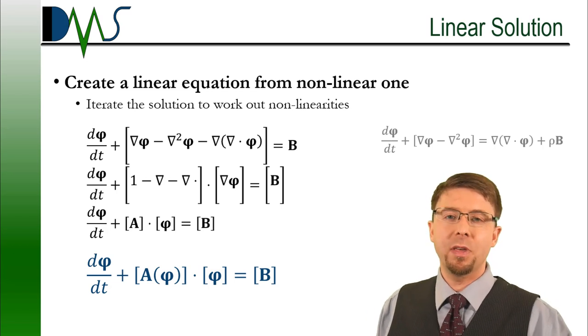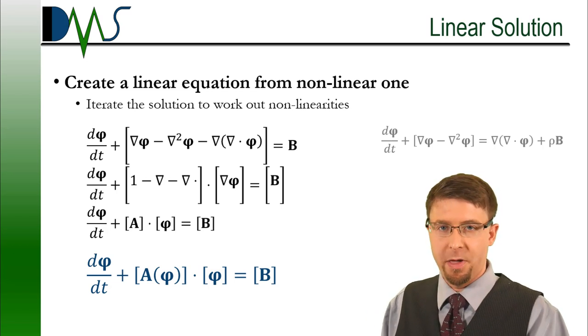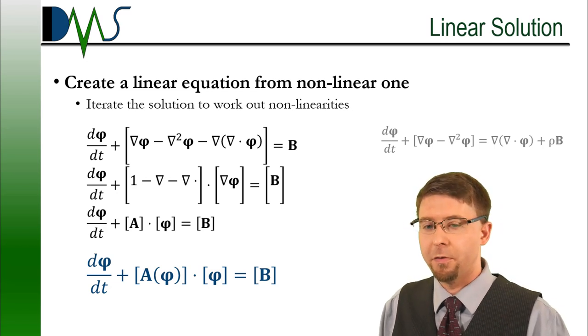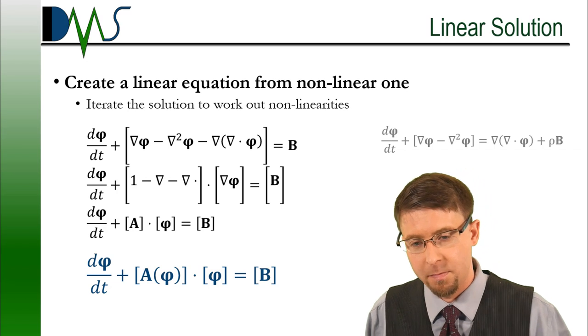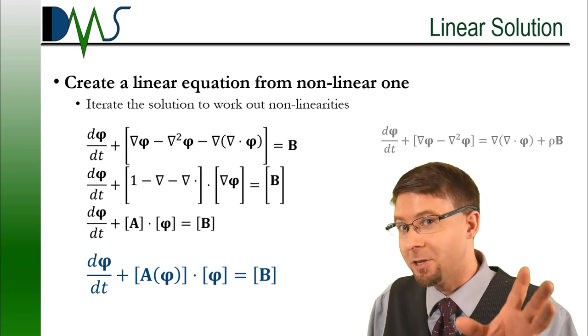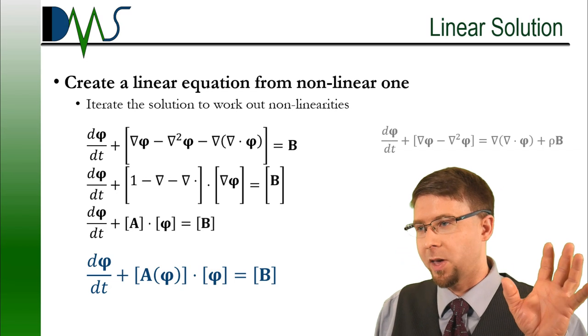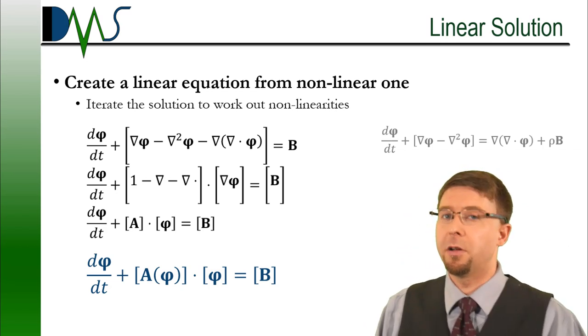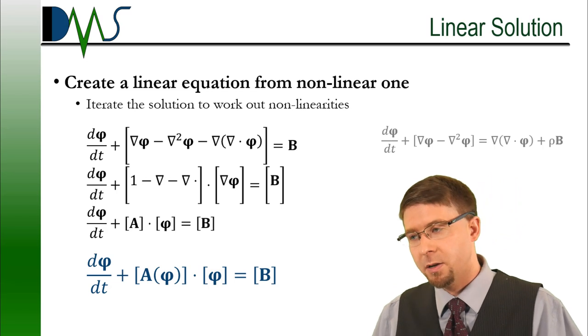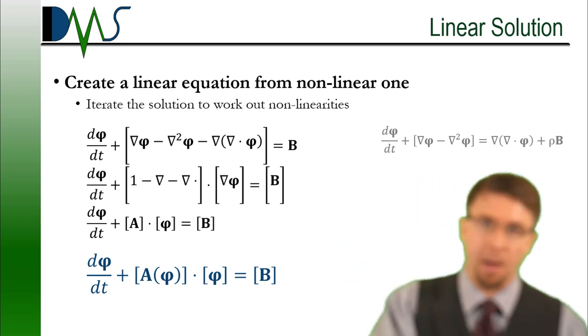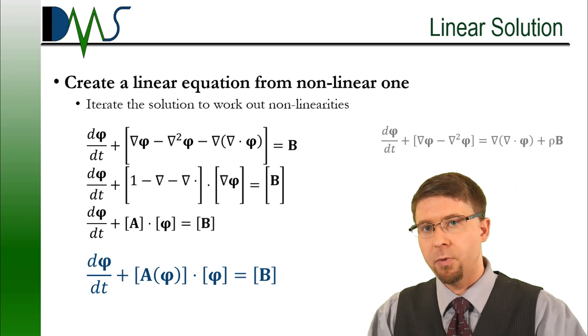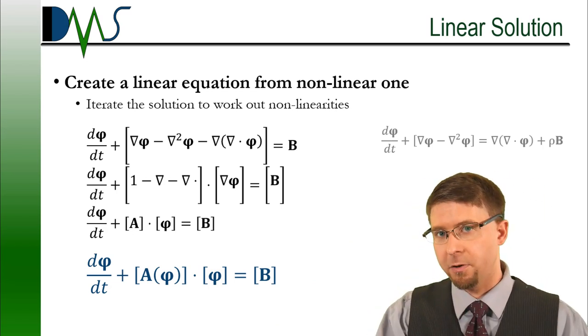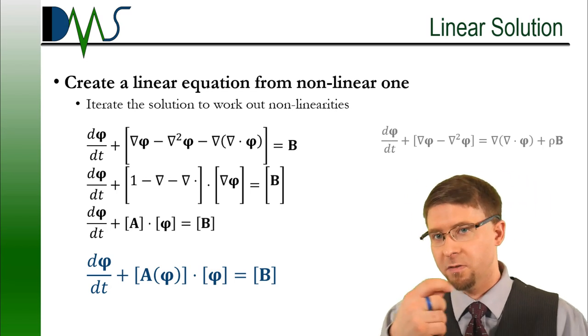We take an initial guess at what our solution will be for our phi variables. We use that initial guess to form our matrix of coefficients, our A matrix. Don't tell the linear solver that it's actually a nonlinear problem. Okay, we get a linear solution. That was our guess. Okay, take that linear solution, update our A matrix with that. And we just keep iterating like this. Update your A matrix, solve for your solution. Update your A matrix, solve for your solution.